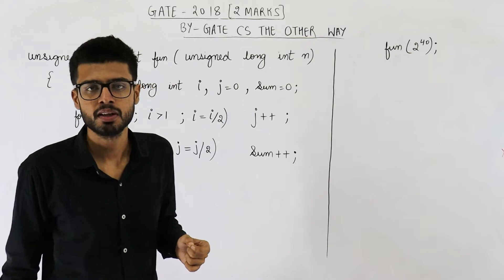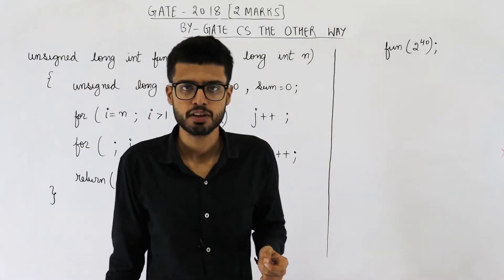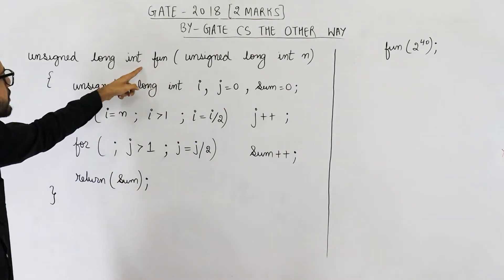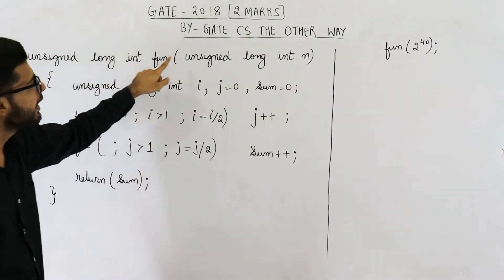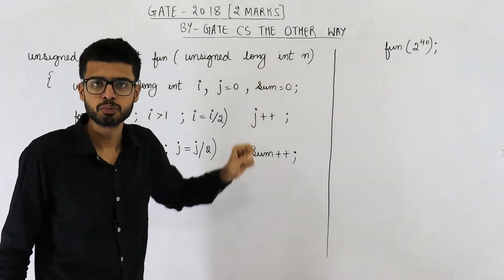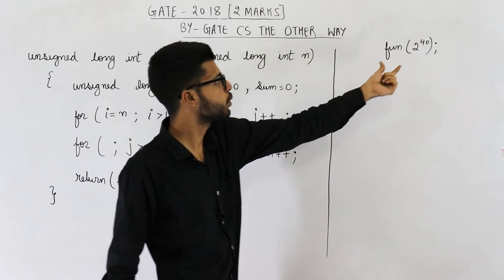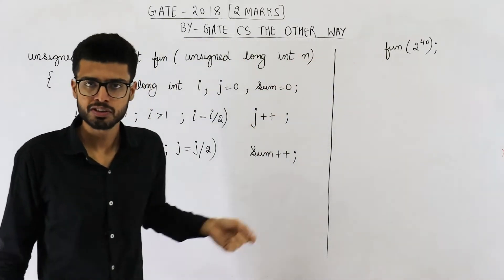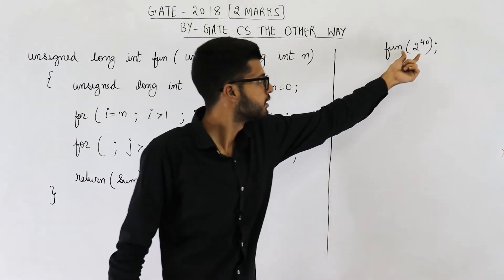It is given in the question that an unsigned long integer is of 64 bits. The function name is fun. Its return type is unsigned long integer and it expects an unsigned long integer as parameter. The parameter name is n. We are passing 2 raised to the power 40 to n, and n is of 64 bits, so it is capable of storing such values.